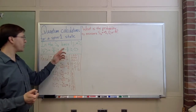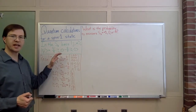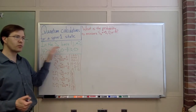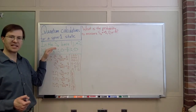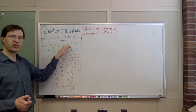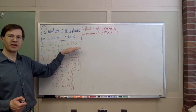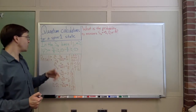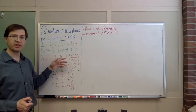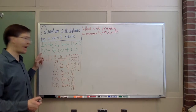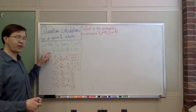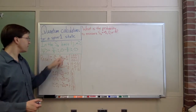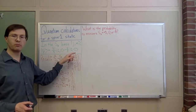We're going to consider a spin-1 particle, and in particular we're going to look at a particle that's in the following state. I'm writing this state in the angular momentum states basis for Sz, the z-component of angular momentum, in the standard notation |j, m⟩ inside our ket for j total angular momentum and m z-component. So these are all going to be |1, something⟩ states. I'm writing my state psi as 3i/5 times the |1,0⟩ basis state minus 4/5 times the |1,-1⟩ basis state.